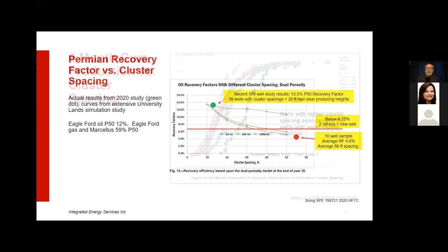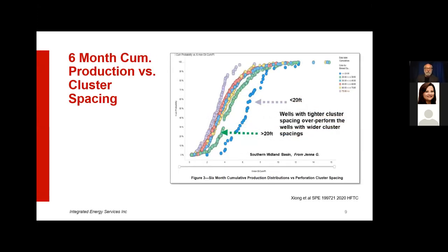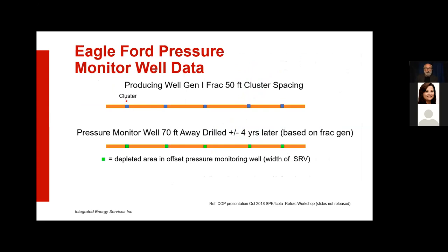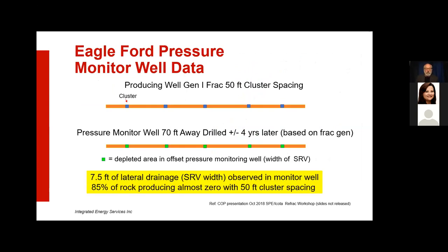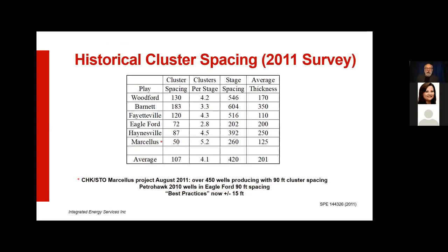Closer cluster spacing clearly gives you better stimulated reservoir volume, so you make more oil. A neat example from South Texas: an operator drilled a monitor well 70 feet away from a producing well and saw that only 7.5 feet — 5% of the rock — was not produced. They subsequently went to 7.5-foot and 15-foot spacing on several wells and didn't see much difference between them, so they're back on 15 feet. But clearly not 50 and clearly not 90 feet — the first Eagle Ford wells had 90-foot cluster spacing.